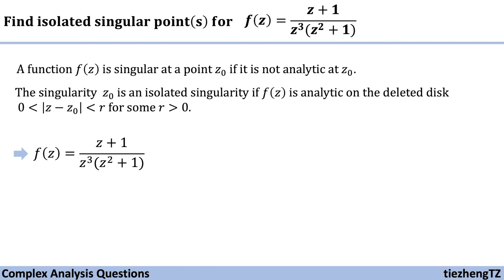So we need to figure out the values where the denominator equals 0. First, we know z cubed cannot be 0, and also z squared plus 1 cannot be 0 — two cases. So in this question, the singular points are z equals 0 and z equals plus or minus i, because i squared equals minus 1.